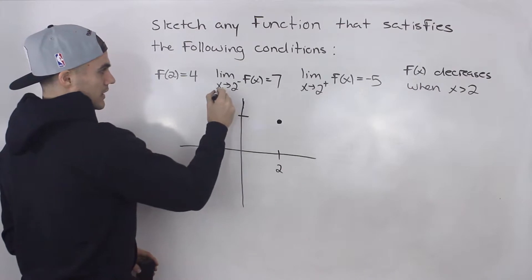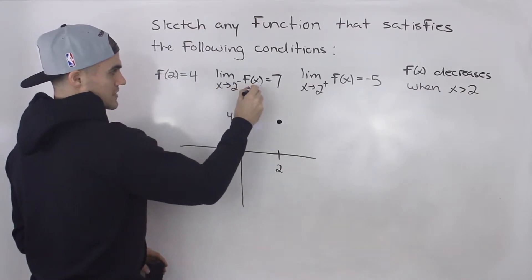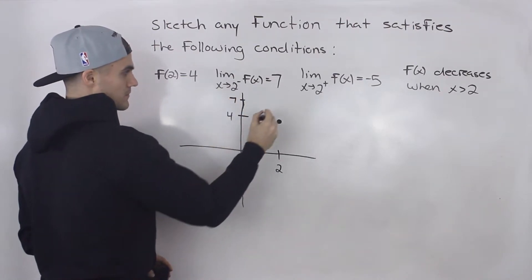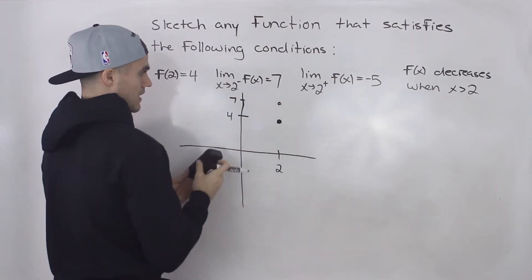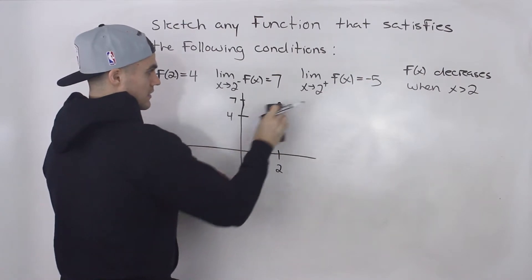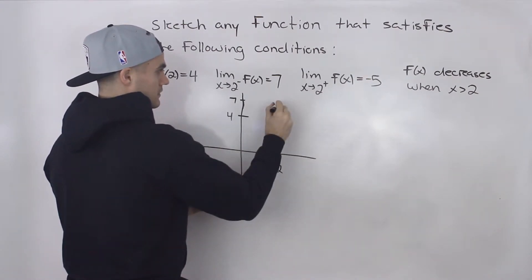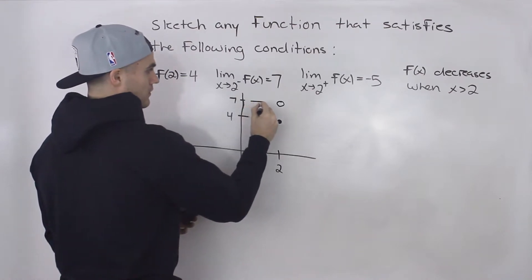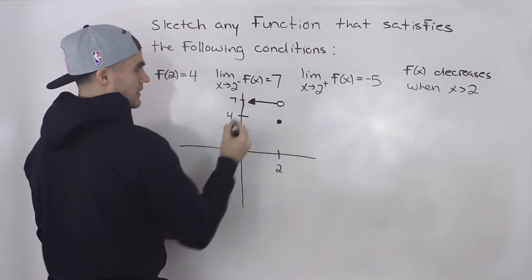And then we're told the limit as x approaches 2 from the negative side of the function equals 7. So let's put a y value of 7 up there. And since the function is defined here, it can't be defined at that y value of 7. So we would put a hole there. Let's put a horizontal line like that.